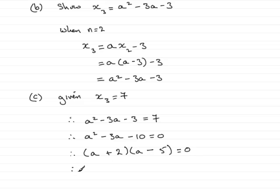So when we've got it factorized, we can say that either a plus 2 equals 0, or the factor a minus 5 equals 0. In this case, we subtract 2 from both sides, and that gives a equals minus 2.